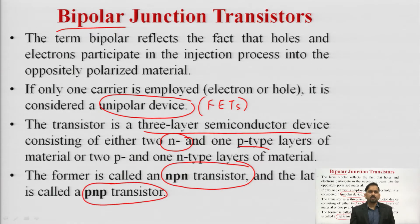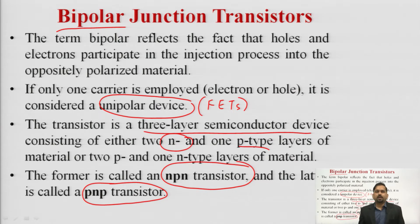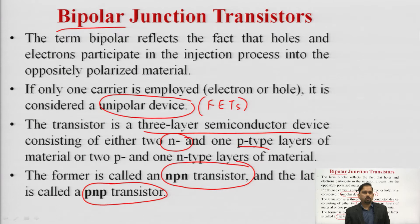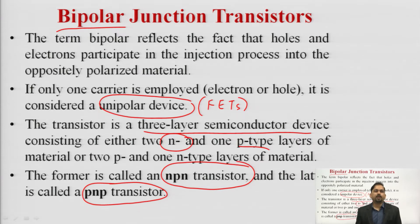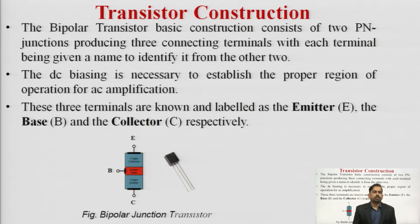In an NPN transistor the major contribution is due to electrons, and in PNP the major contribution is due to holes. We will now see the construction of the transistor.